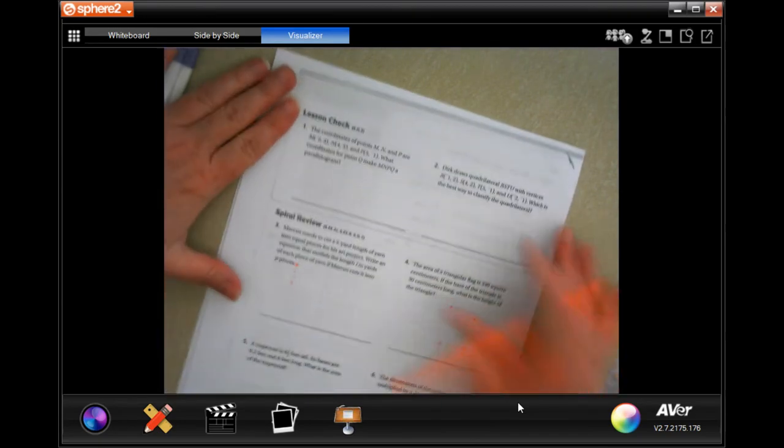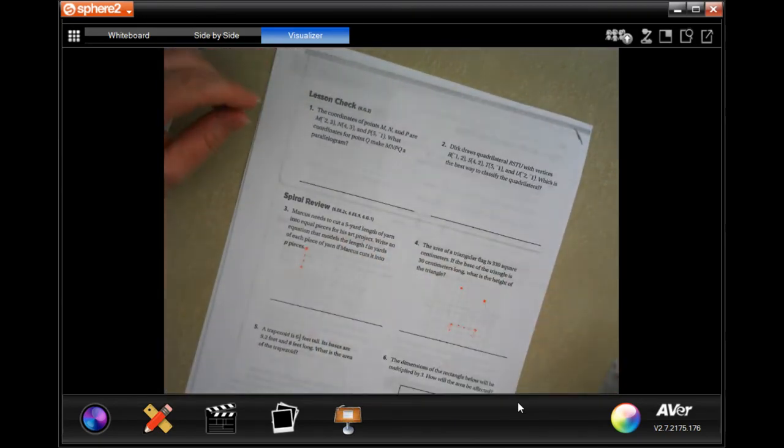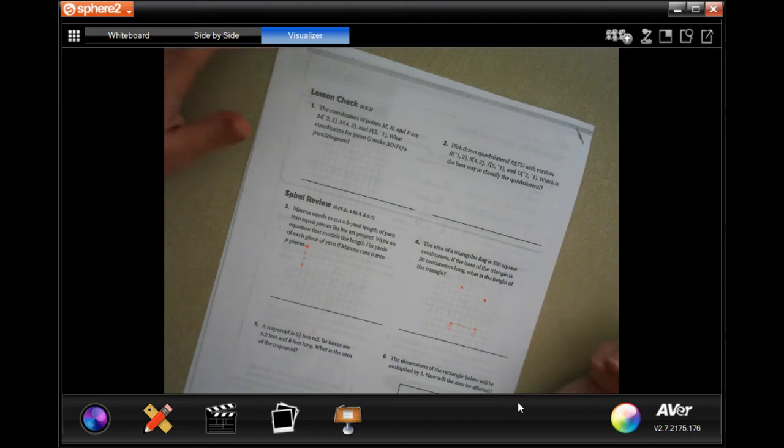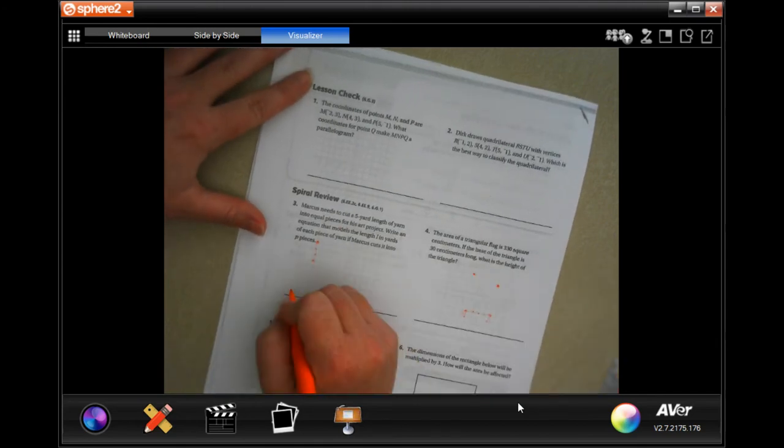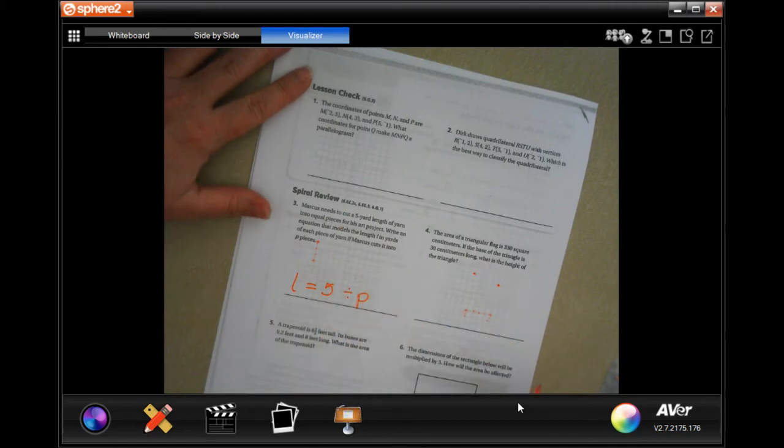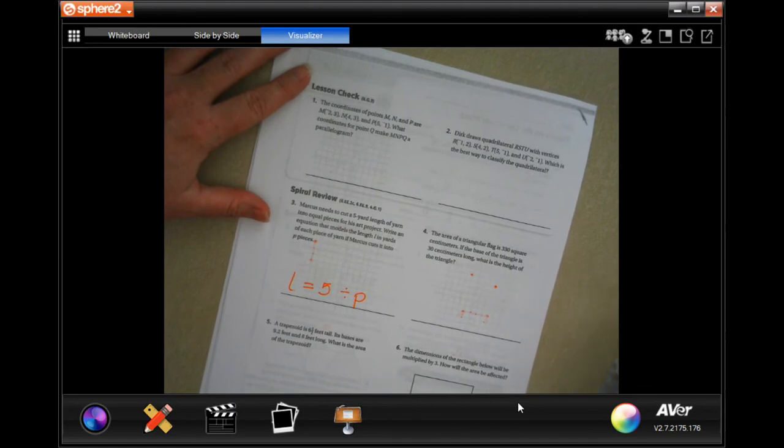All right? So the spiral review says, Marcus needs to cut his fiber lines of yarn into equal pieces for his art project. Write an equation that models the length L in yards of each piece of yarn if Marcus has cut it into key pieces. All right? Well, the length of the yarn is going to, it's 5 yards, and we're going to cut it up and divide it into pieces. Done. Okay?